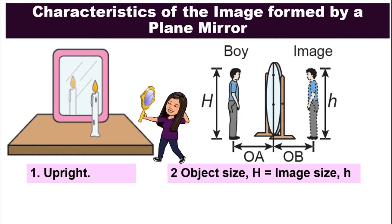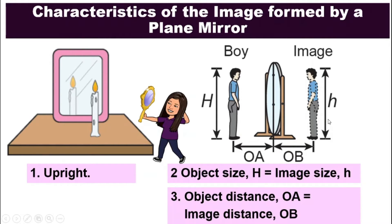Number two, the size of the object and the size of the image is the same. Look at this boy, him and his image are of the same size. And also the distance of the object from the mirror is also the same as the distance of the image from the mirror. So look at the boy and his image. Both of them stand away from the mirror at the same distance. OA is equal to OB.